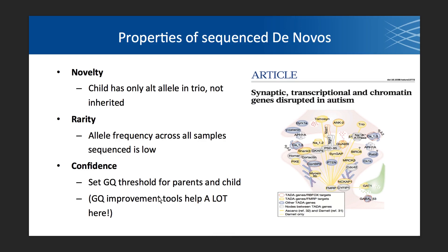To have a high-confidence de novo, we use characteristics established from an autism study done at the Broad. It must be a novel variant — only in the child, not in the parents, and typically not in any other samples in the study if looking at multiple trios. That is the rarity criterion. It's also very important to set a confidence threshold on the parents because you might be undersampling one parent's haplotype — meaning the parent wasn't truly homozygous reference, you were just unlucky and didn't sample the alt allele in the parent.